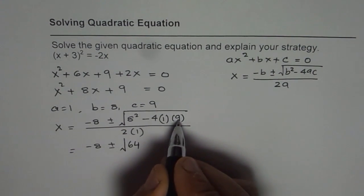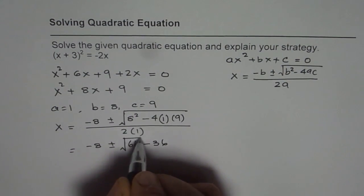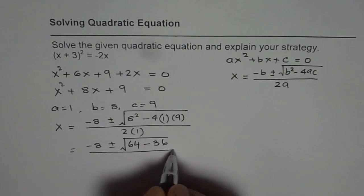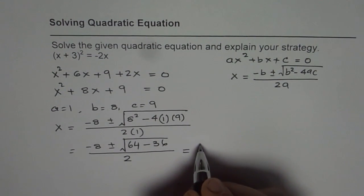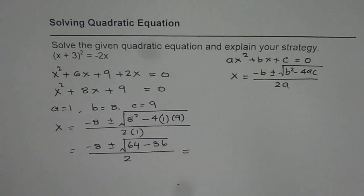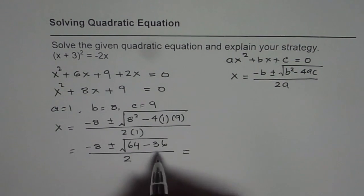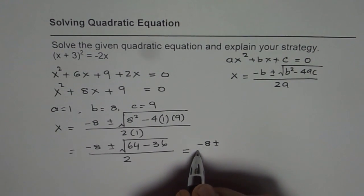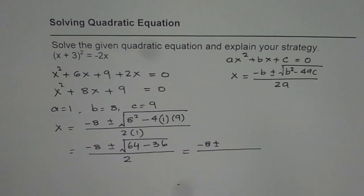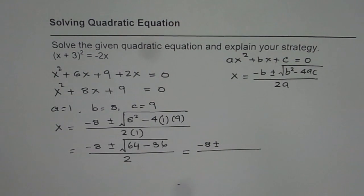9 times 4 is 36. You have to keep your calculator handy to solve these questions. Now here we have -8, or we can write, I think we could solve it in simpler steps, -8 ± √(64 - 36).